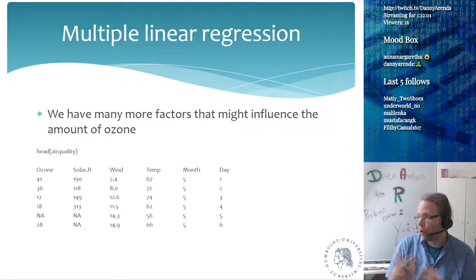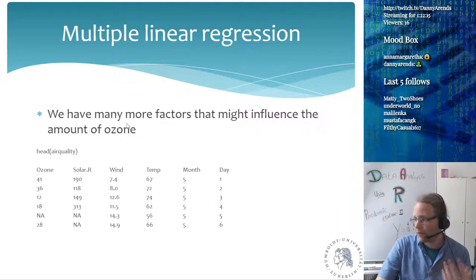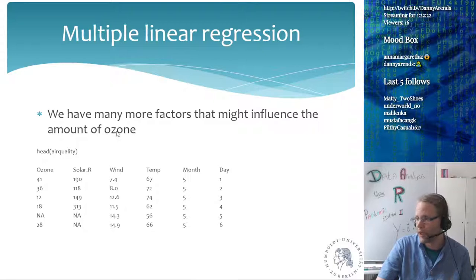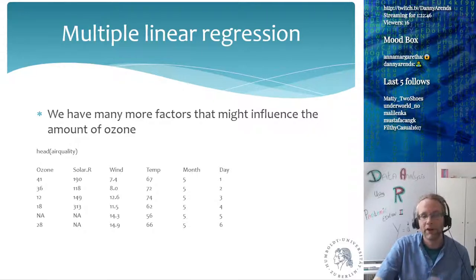This is what you do for single linear regression, where we have a single predictor (temperature) and a single response variable (ozone). However, in our air quality dataset there are many more factors that might influence ozone — not just temperature. Wind might affect ozone concentration, as might solar radiation. The month of measurement might introduce a seasonal effect. We can study these using multiple linear regression.